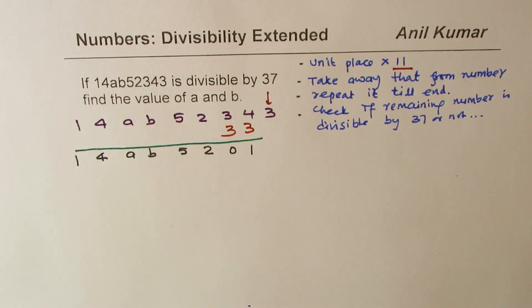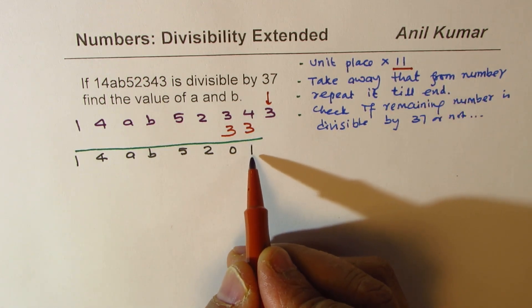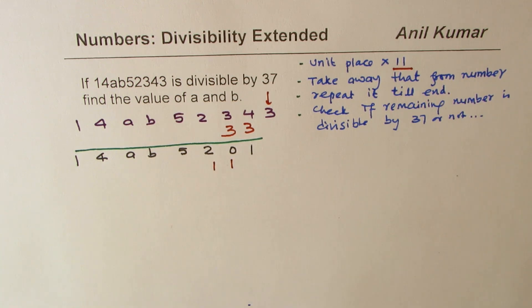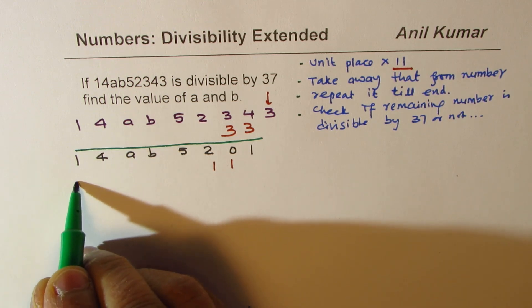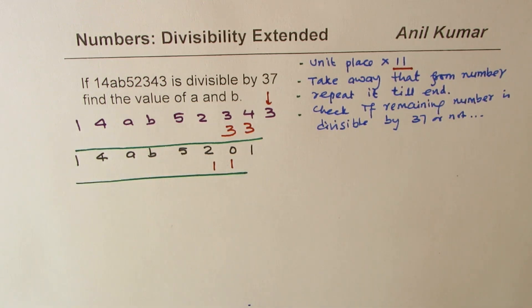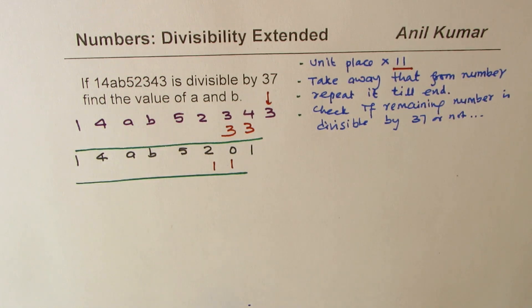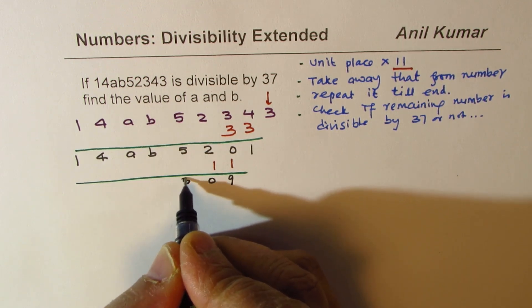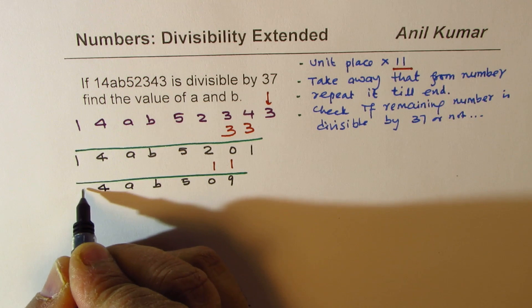Now again, we'll repeat this process. Unit place number is 1. We'll multiply 1 with 11, so we get 11. And we'll again take away. So we are taking away this number, it's a difference. So we get 9, 0, 5, B, A, 14, and 1.